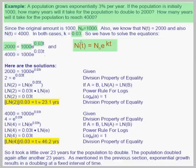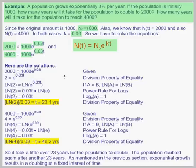In the second question our n as a function of t is 4,000. So we let 4,000 equal the initial amount 1,000 times e to the .03 times t power. We can solve both of those by using our methods for solving exponential equations.